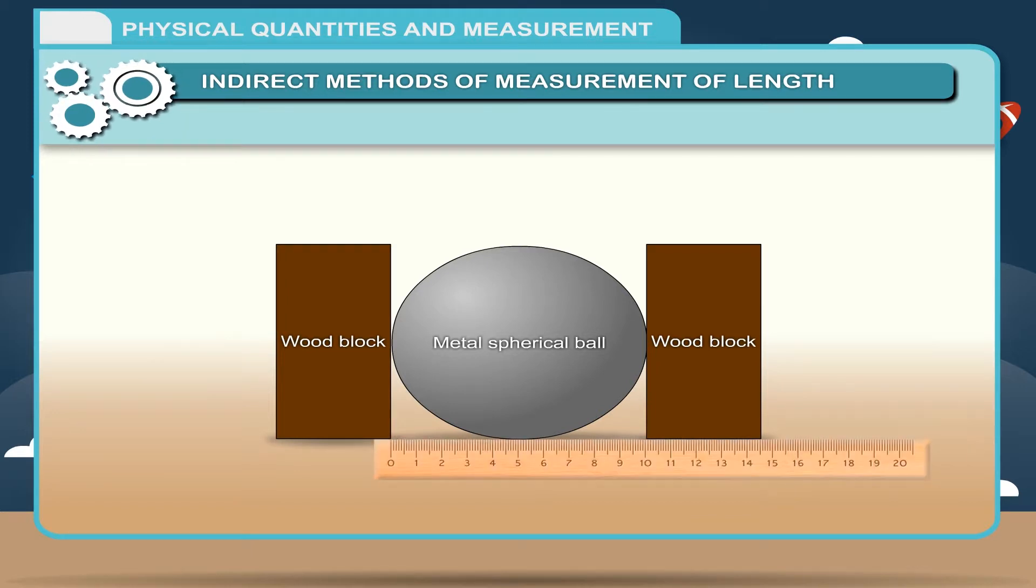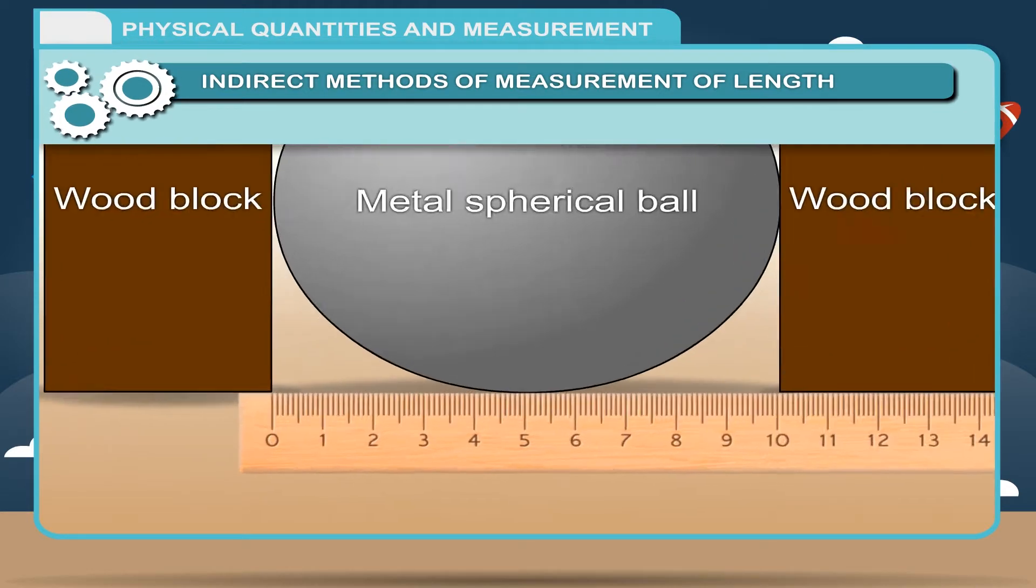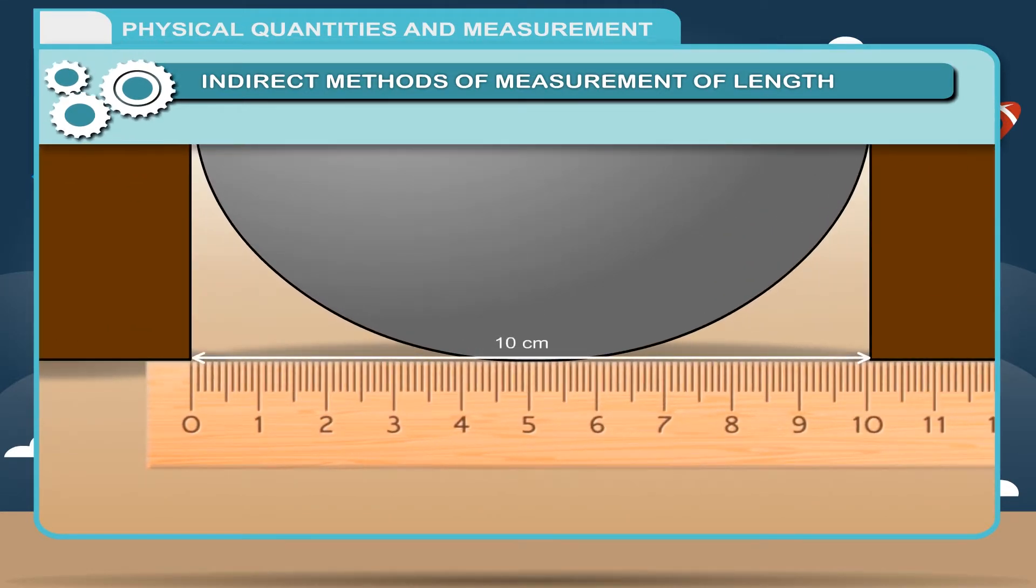Using a ruler, measure the distance between the inner faces of the two blocks which are in contact with the sphere. If the ruler is placed as shown in the figure, the difference between the two readings on the ruler gives the diameter of the sphere.